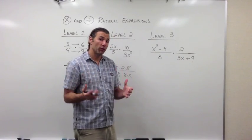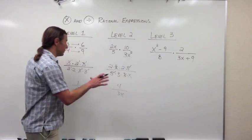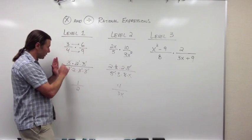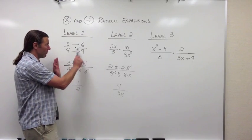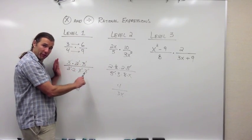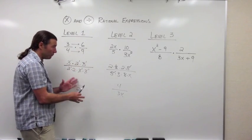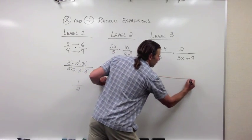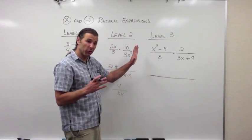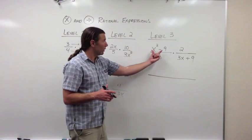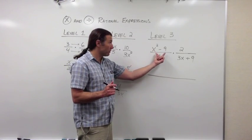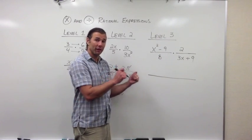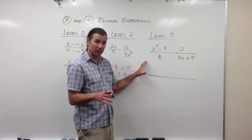Now we'll look at some level 3 rational expressions. We're still going to follow the exact same procedure as levels 1 and 2: draw a big fraction bar, factor everything out, divide out the common factors, and multiply what's left. The only difference with level 3 is that we need to know how to factor polynomials. If you're not familiar with factoring polynomials, you'll need to go back and learn that before this will make sense.